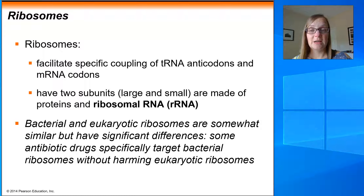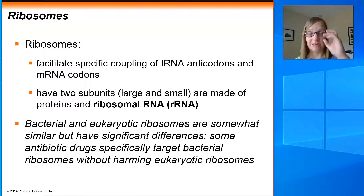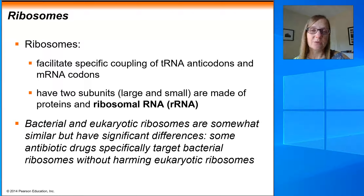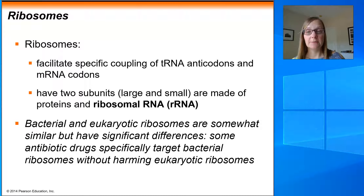Now let's take a closer look at the ribosome. The ribosome facilitates the coupling of the tRNA anticodon with the mRNA codon. Ribosomes also have two subunits — a large subunit and a small subunit, like a large potato and a small potato. Both are made out of protein and the rRNA we talked about earlier.